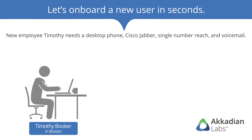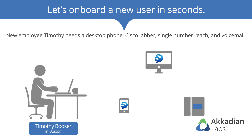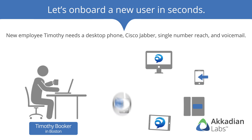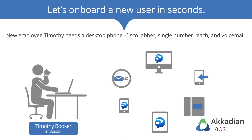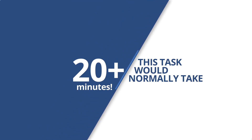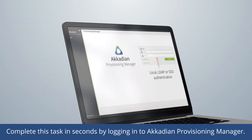To get started, Timothy needs a desktop phone, Jabber for desktop, Jabber for mobile, Jabber for tablet, single number reach, and voicemail. Normally, this provisioning process would take up to 20 minutes to complete. But watch to see how quickly we can complete this task by using Acadian Provisioning Manager.